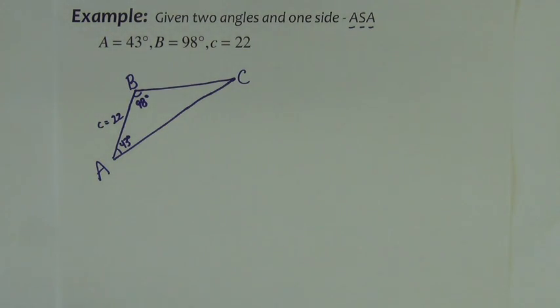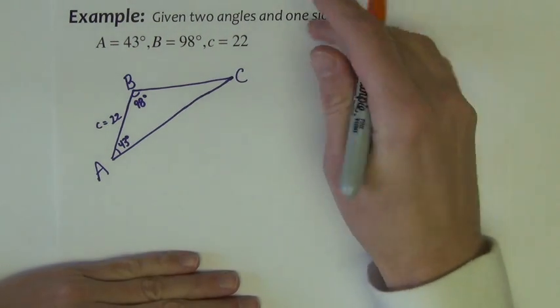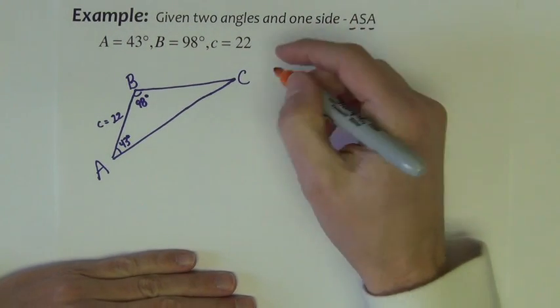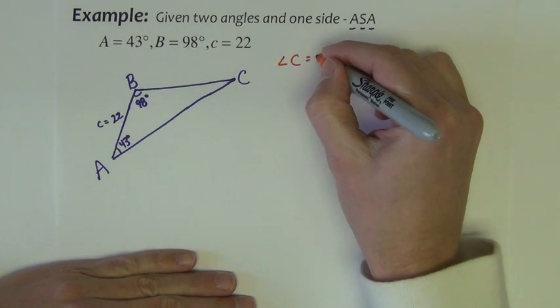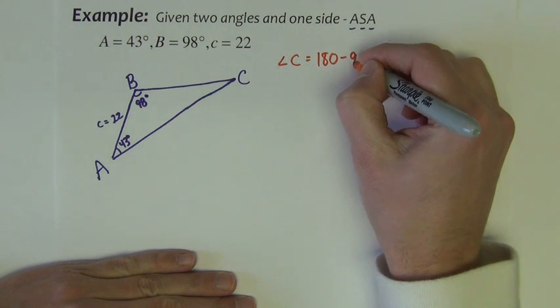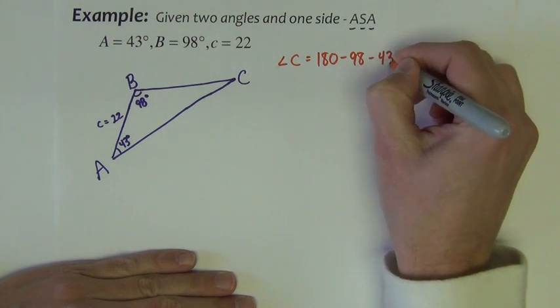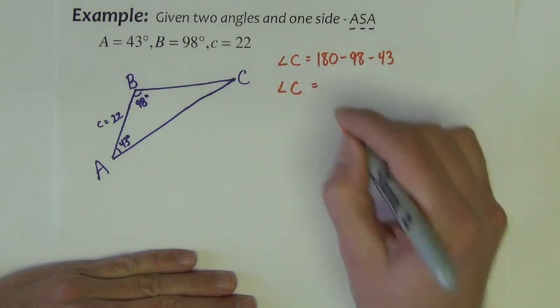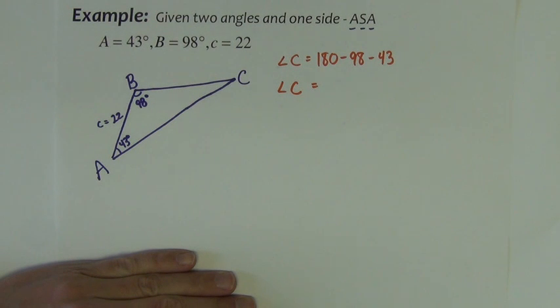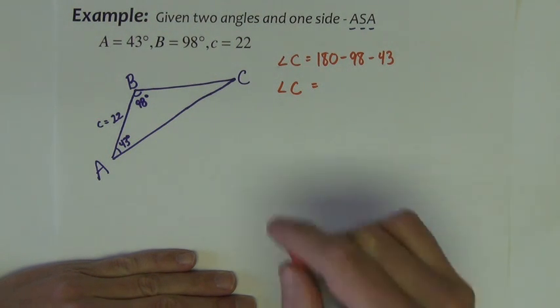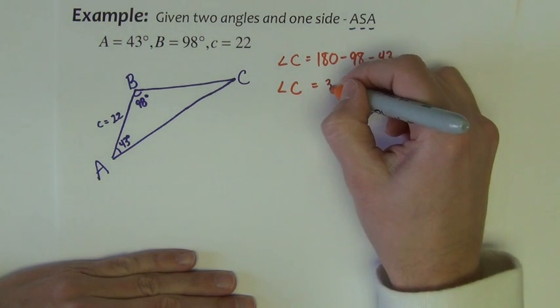Again, I start with the angle because it's the easiest. The measure of angle C is 180 minus 98 minus 43. Which gives me angle C to be 39.